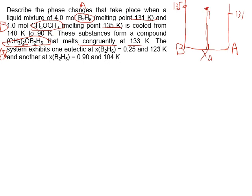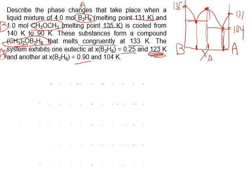The compound AB melts congruently at 133 K, so that melting point sits between the two pure substance melting points. The system exhibits two eutectic compositions: one at x = 0.25 with a melting point of 123 K, and another at x = 0.9 with a melting point of 104 K. Connecting these points gives us the complete phase diagram.